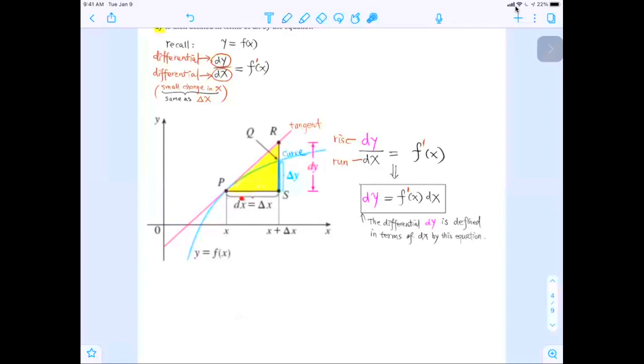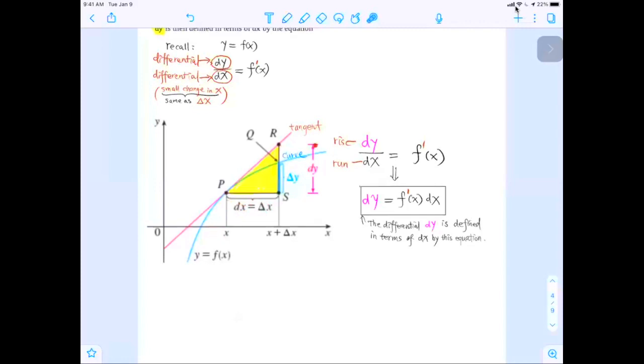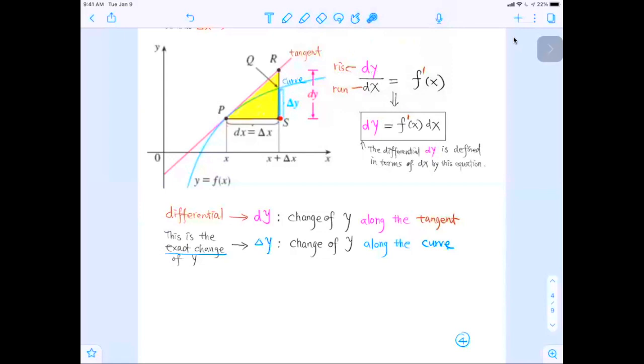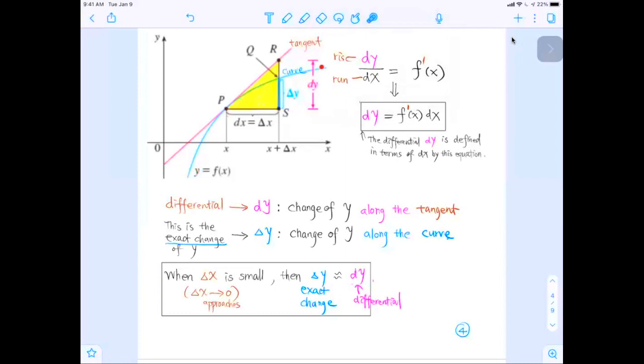Notice that the differential dx is the small change in x that's the same as delta x. The differential dy is the change of y along the tangent line. And delta y is the change of y along the curve. This is the exact change of y of the function. For this differential curve, when delta x here is small, which means when delta x approaches zero, then we can use this differential dy to approximate this exact change in y. Which means we can use this change of y along the tangent line to approximate the change of y along the curve.